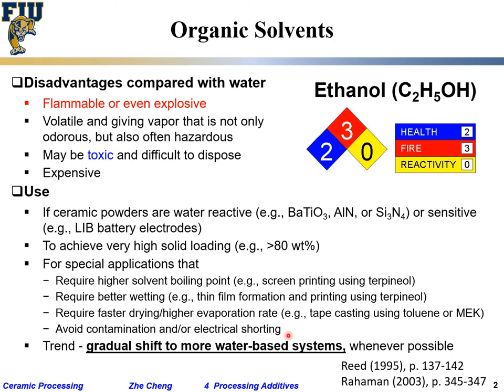Despite all the useful cases for organic solvents, the general trend is that industry often starts with organic solvents for certain applications but gradually moves toward aqueous processing as people learn how to better control the process. For example, some lithium-ion battery electrode manufacturers are moving at least certain steps toward aqueous-based processing because it's much cheaper and environmentally friendly — you don't have to dispose of all the waste chemicals.